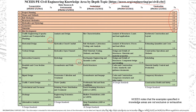In water resources and environmental, the largest category is hydrology. Geotechnical is fairly evenly split with several categories in the four to six question range. For structural, 12 to 18 questions should be expected in design and details of structures, focusing on component design and detailing. In construction, the highest categories are six to nine questions in construction operations, methods, and temporary structures.